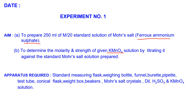The apparatus required would be a standard measuring flask — 250 ml, since we have to make 250 ml. If we have to make 100 ml, we'll take a 100 ml flask. Weighing bottle, funnel, burette, pipette — instead of pipette, another burette may also be taken. Test tube, conical flask, weight box, beakers, and chemicals like Mohr salt crystals, dilute sulfuric acid, and KMnO4 solution.